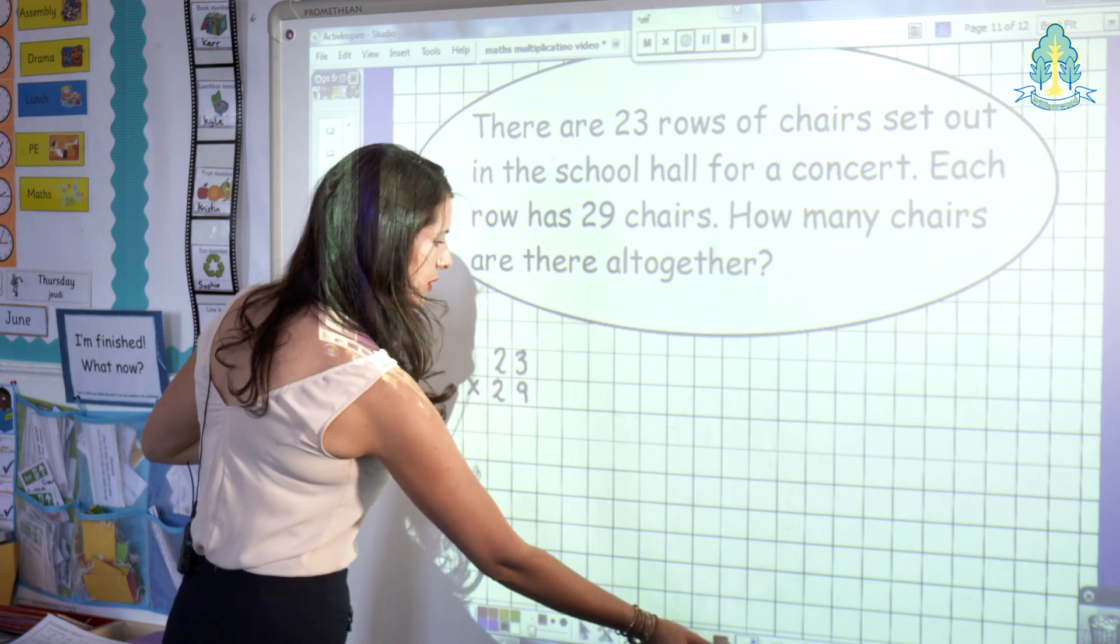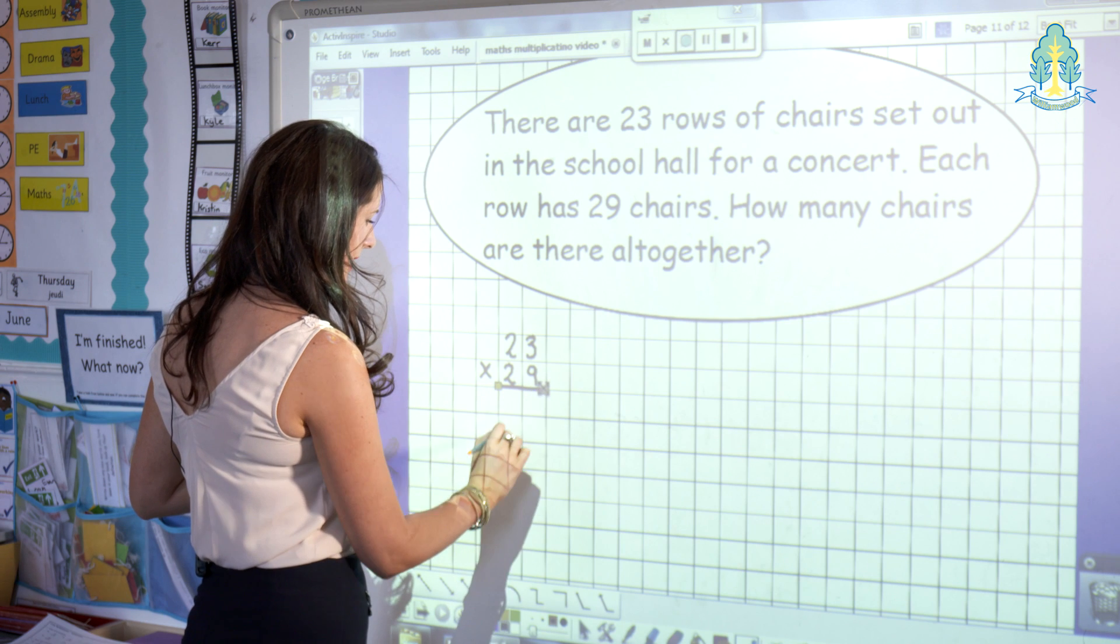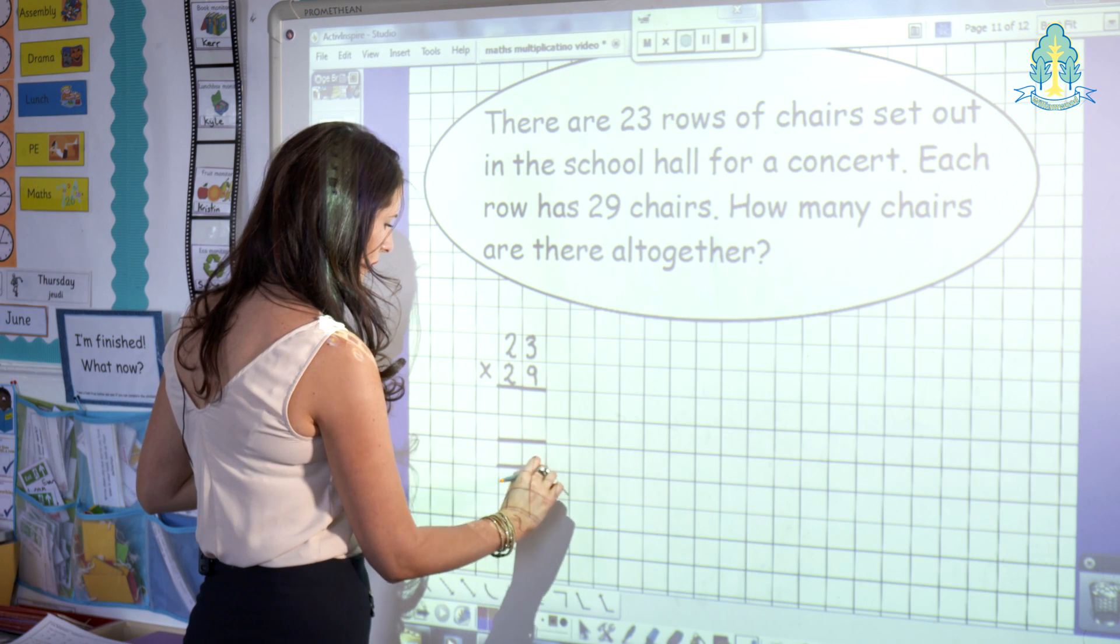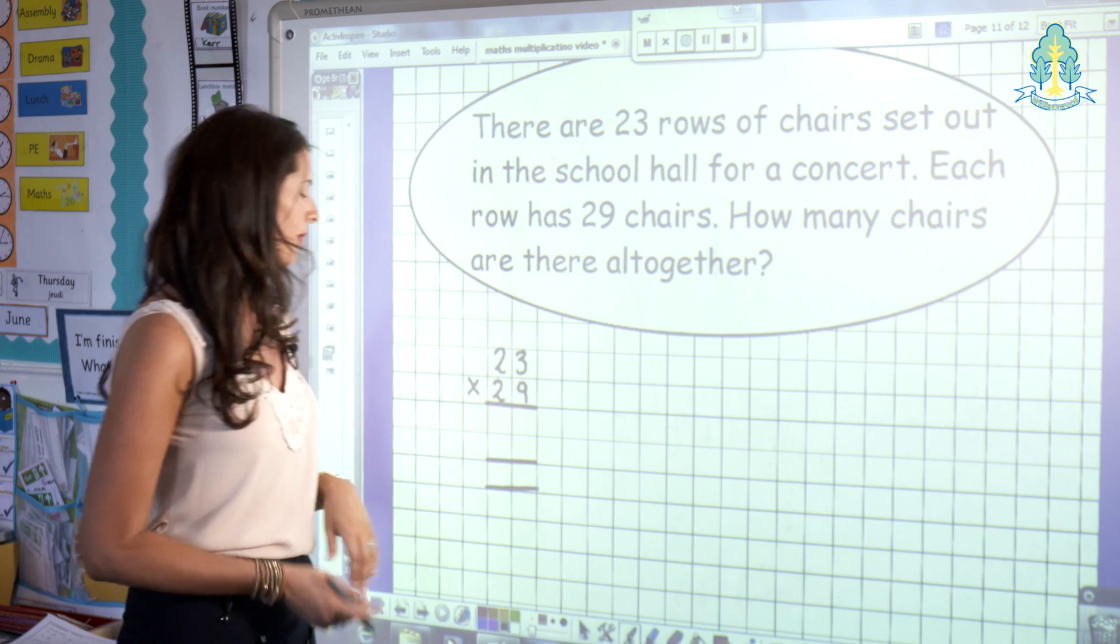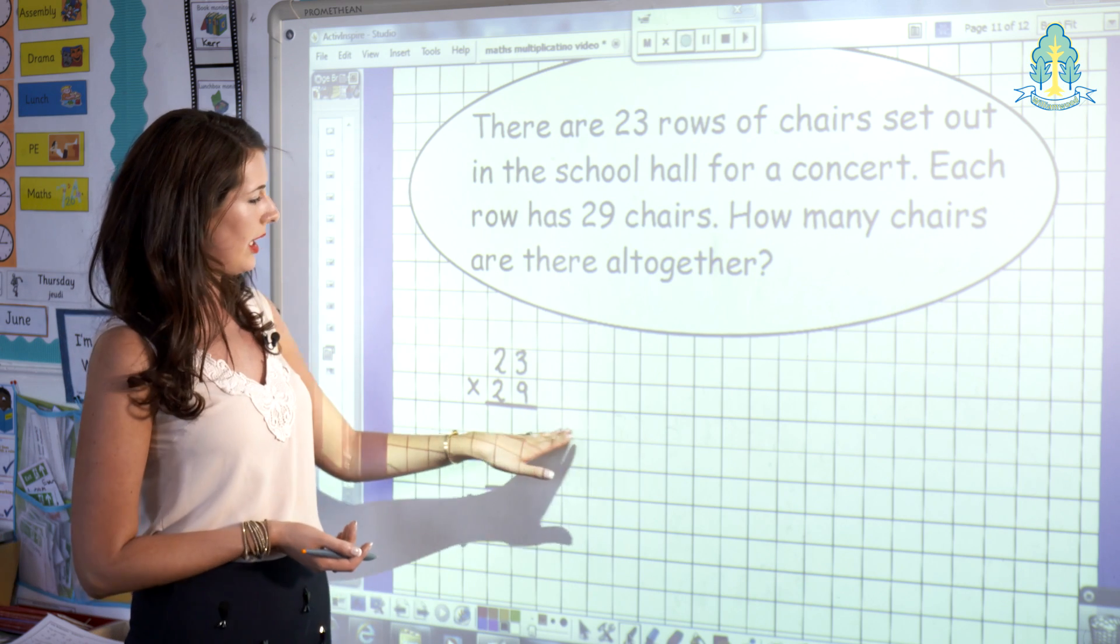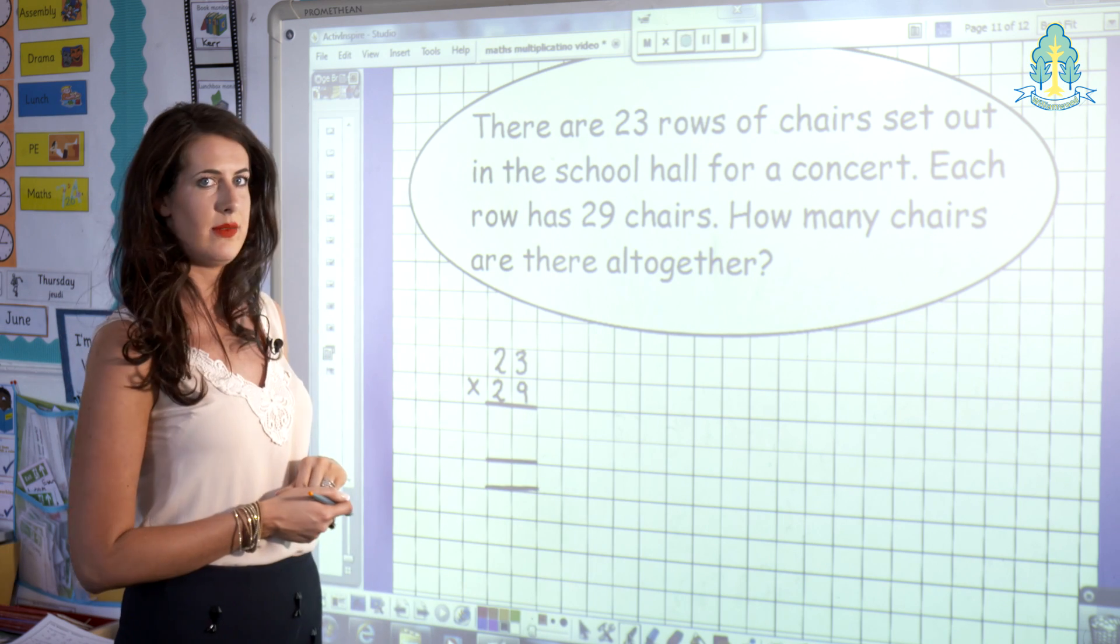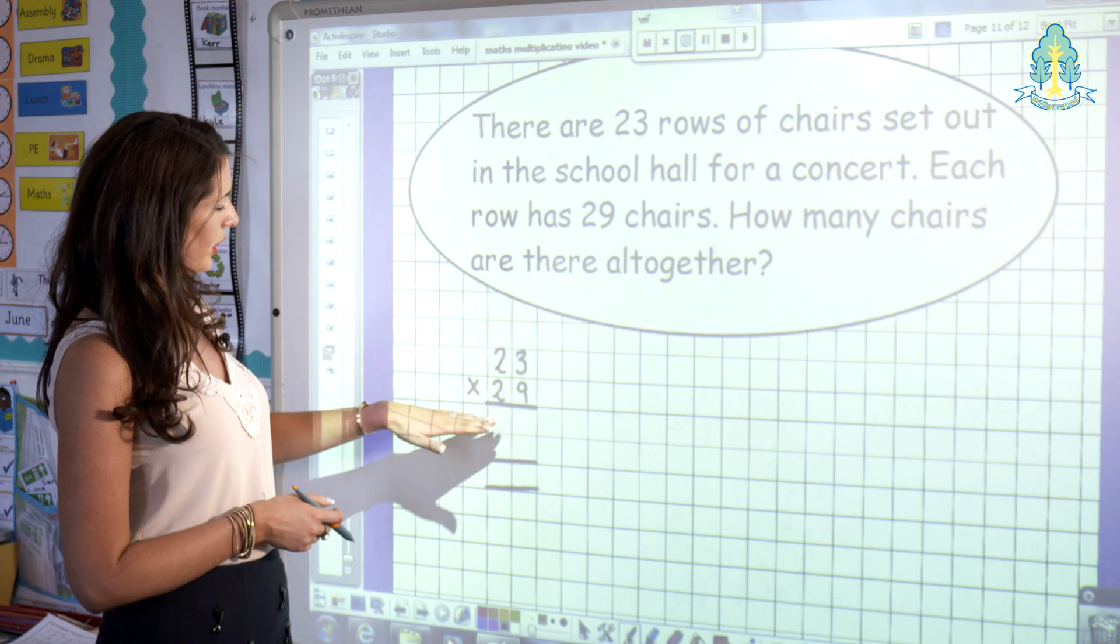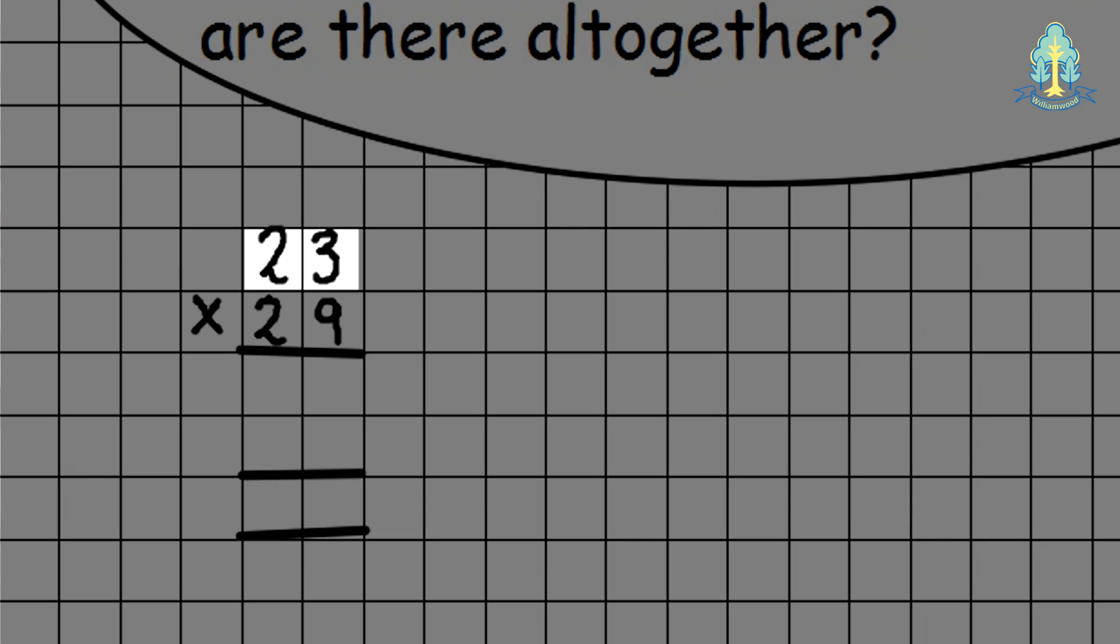This is a long multiplication, and the children will then set it out as a long multiplication. As they are now more confident, I will not write the brackets at the side. So we'll now look at our first row, which is looking at 23 multiplied by 9. So 9 times 3 is 27. We put the 7 down and carry our 2. And then 9 times 2, which is 18, and carry on our 2 gives me 20.